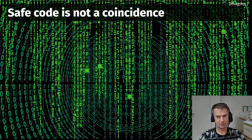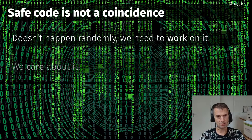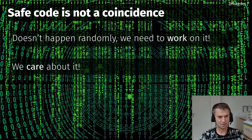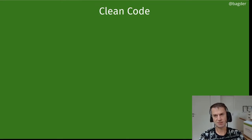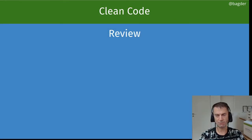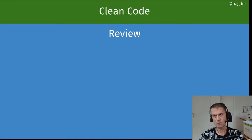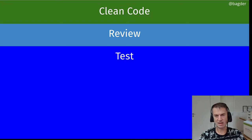We know that doing safe code is not a coincidence and we really have to work on it. In the curl project, we certainly care about it. We don't leave this unattended or casually leave it to chance. What we're doing in the curl project — our method to actually provide secure code — is very simple. There's nothing magic about this. We do clean code that follows the code style, write code in a cohesive, coherent style, and we review each other's suggestions, pull requests, and code, and we test them as much as we can.